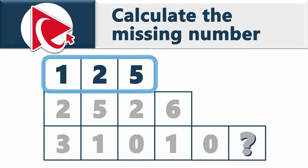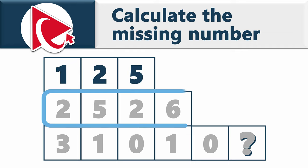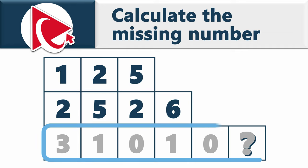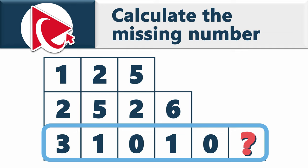In the first row of this pyramid are numbers 1, 2, and 5. In the second row, the numbers are 2, 5, 2, and 6. And in the third row, the numbers are 3, 1, 0, 1, 0, and then comes the missing number, which you need to calculate and select out of four possible choices.